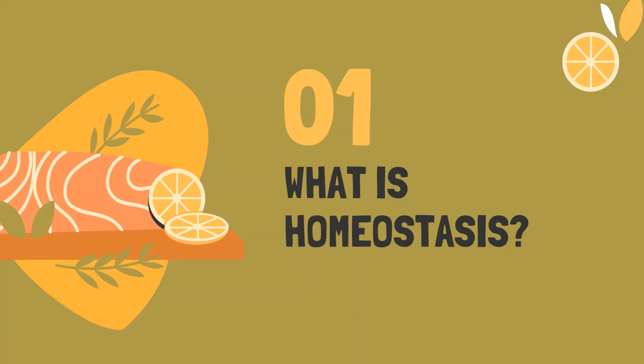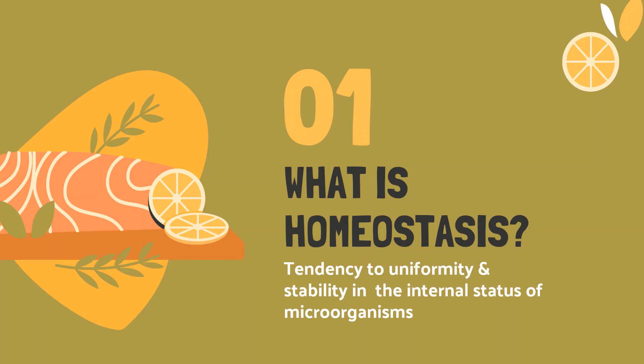So starting with homeostasis — what is homeostasis? Here the food preservation is achieved by disturbing the homeostasis of microorganisms, or you can say the tendency to uniformity and stability in the internal status of microorganisms. This is the scientific definition. In simple words, you can just remember it like this: that microbes will not multiply — they will either remain in lag phase or they will die.